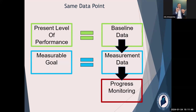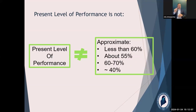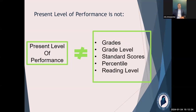Let's talk about what present level is not. It's not subjective — you don't want to use words like 'struggles with,' 'about,' 'sometimes,' 'often,' or 'has difficulty.' You want really clear baseline data. It's not approximate — we see a lot of 'less than,' 'about,' 'approximately,' ranges. Be really confident in your data and put that clear baseline data in your present level. You do not want to use grades, grade levels, standard scores, percentile, or reading level — all of these things can encompass more than one skill. Standard scores, percentile, and grades don't happen often enough for good progress monitoring. And it should not include multiple skills or prerequisite skills — with a caveat on prerequisite skills we'll cover shortly.